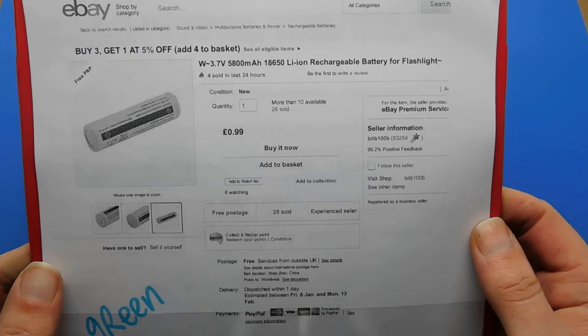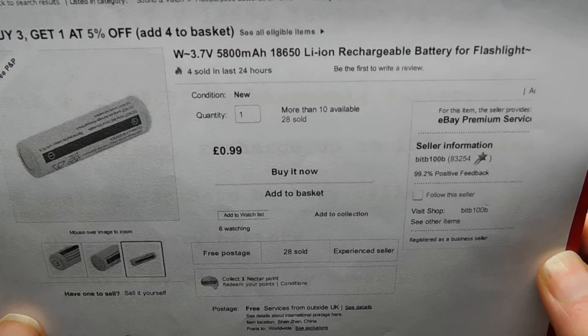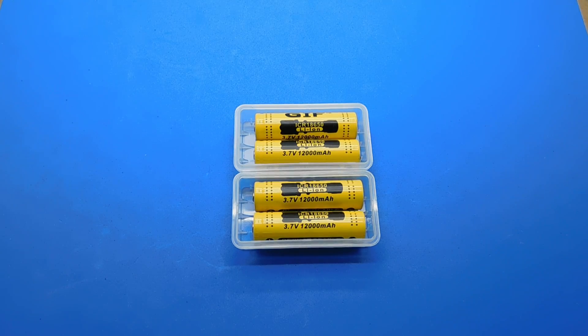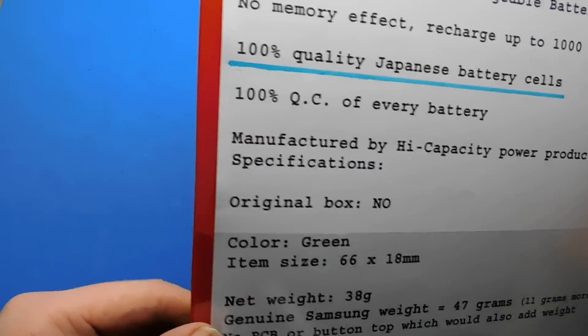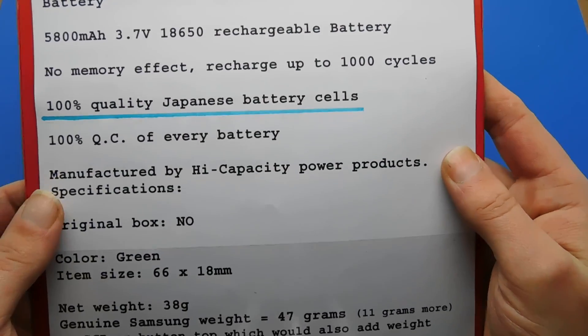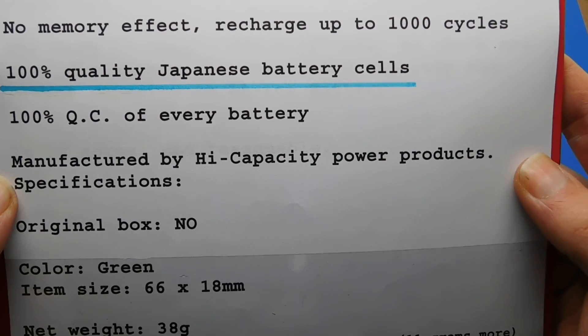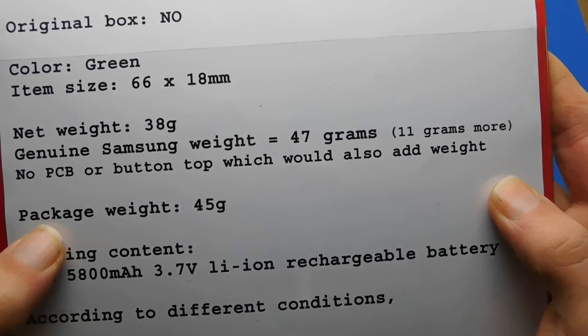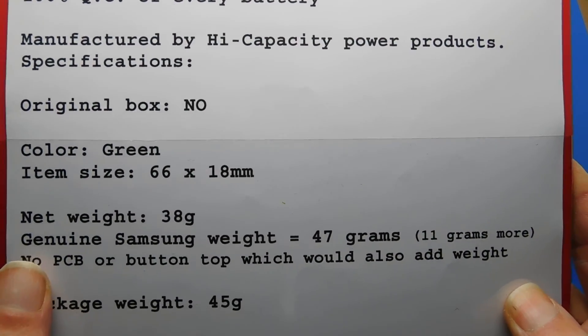Let's look at the seller. I bought from two separate sellers but they are actually the same person. These are the green ones. As you can see up there, it says 5,800 milliamp power. Let's take that out and show you the description. They said they were blue but came as green. It says 100% quality Japanese battery cells manufactured by high capacity power products. The net weight was 38 grams with a package weight of 45 grams. I have written there genuine Samsung weight is 47 grams, and that's a flat top cell, not one that's protected like this.